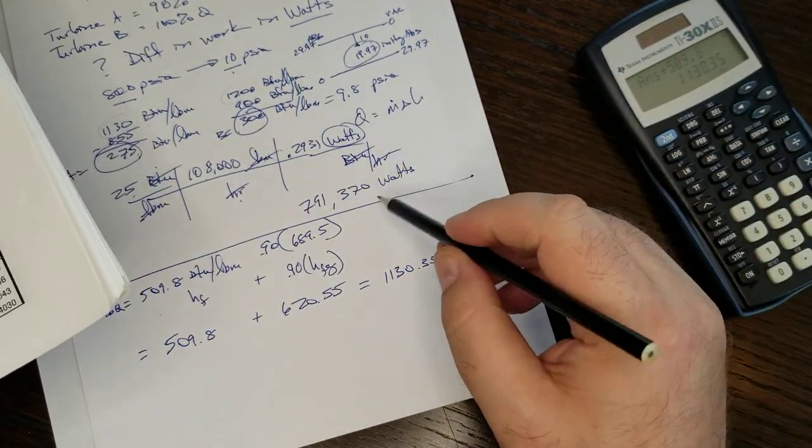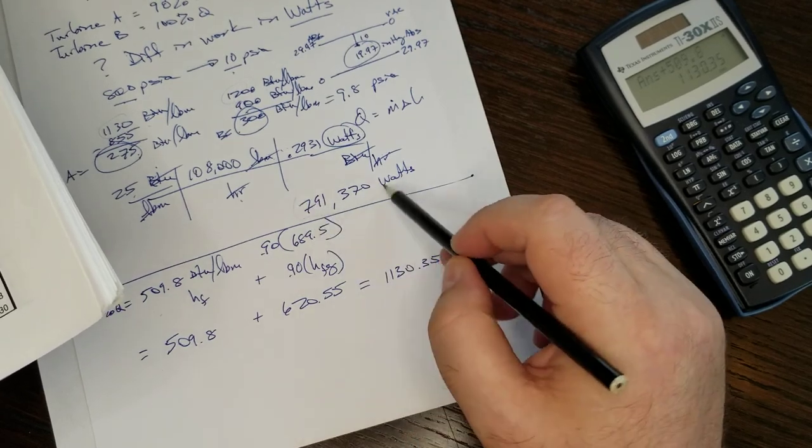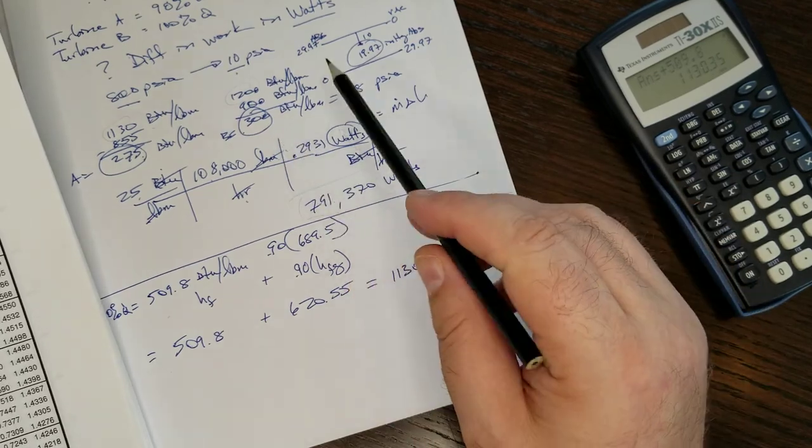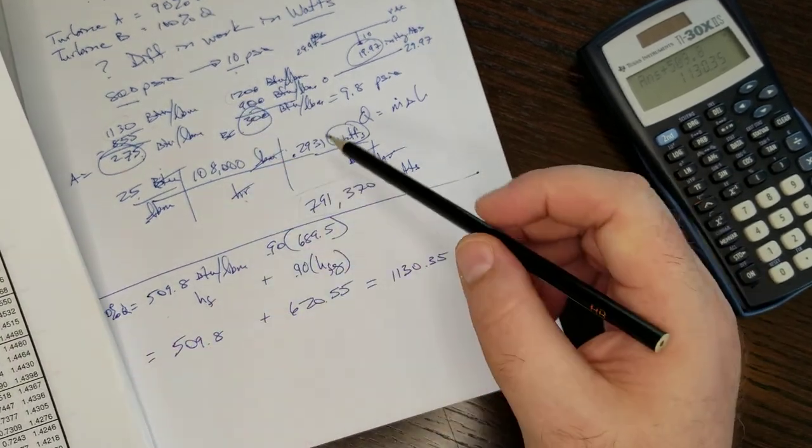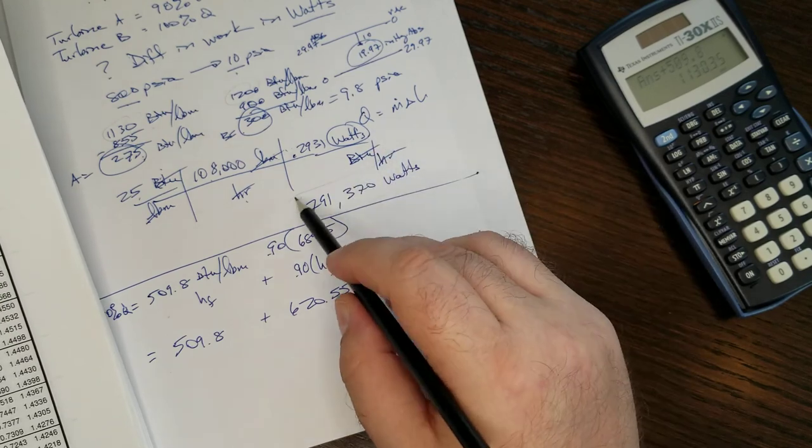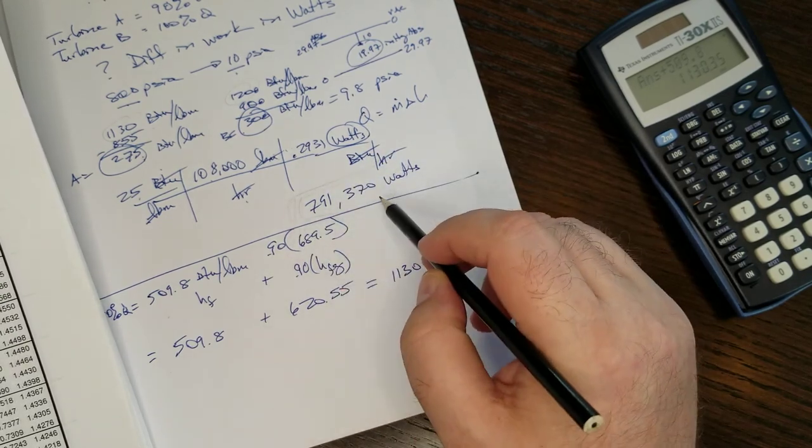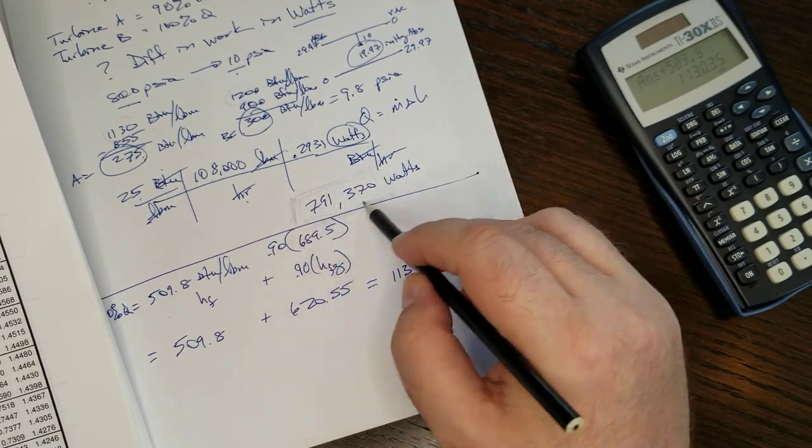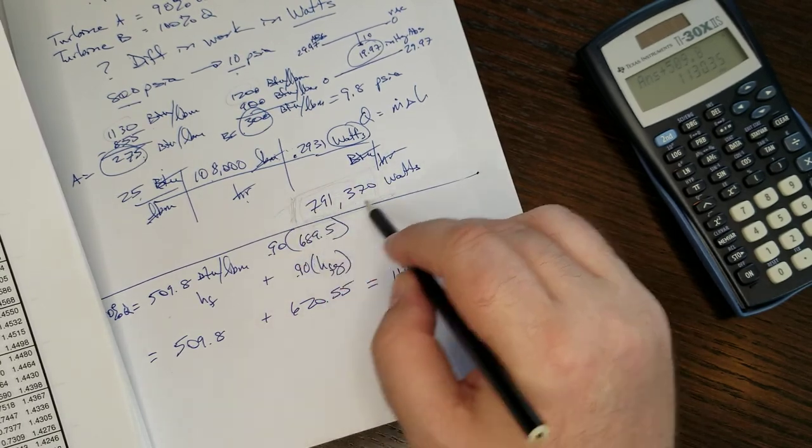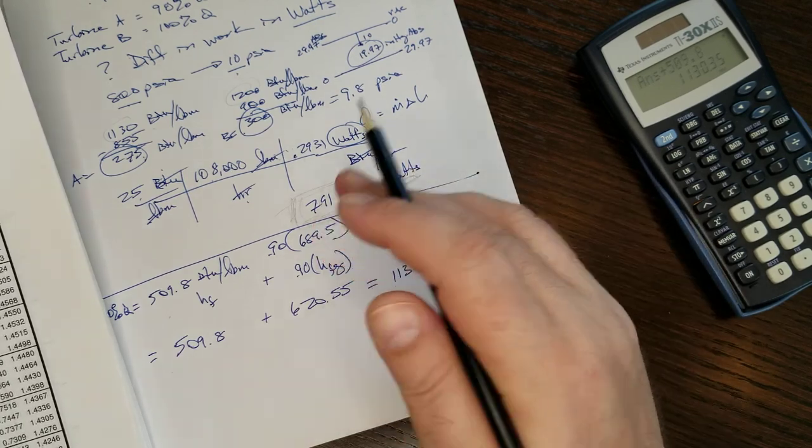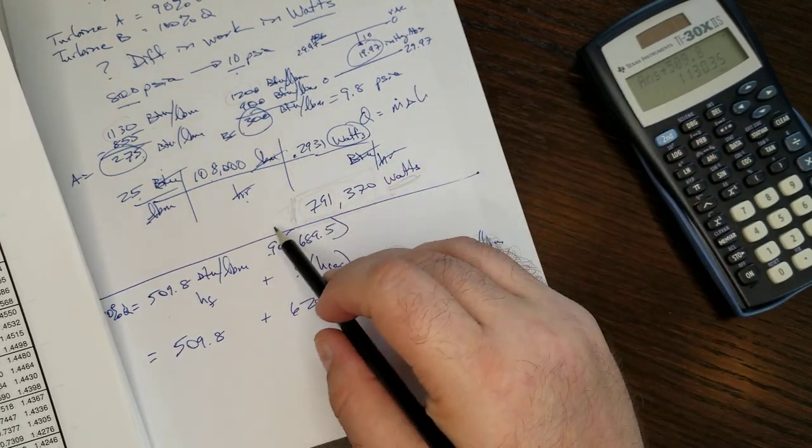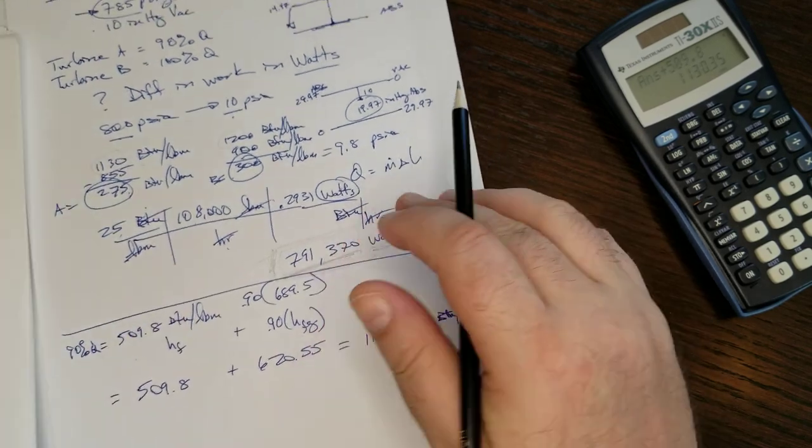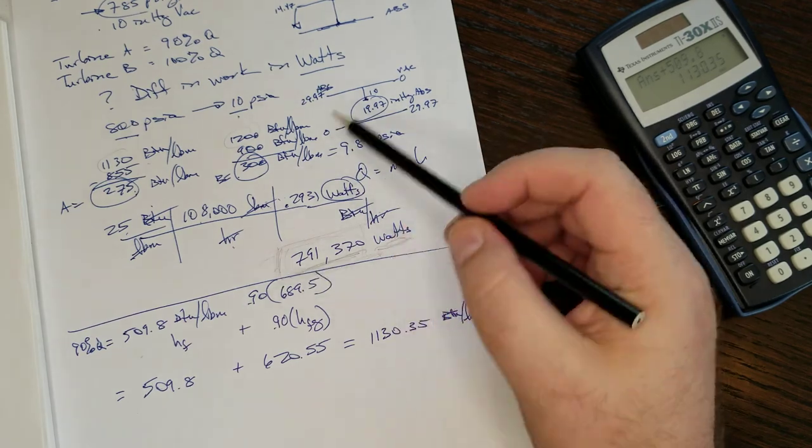And so when you're doing this on the Mollier diagram, whether you're finding the starting points in the steam tables, or you're doing the whole thing on the Mollier diagram, you should be fairly close to this. Like, you might come up with 750 to 800 and 20, 30, 40,000 watts. But you shouldn't be off by a factor of 10, right? You shouldn't come up with something that's like 1 million. So that should be pretty close. But that's solving that turbine work problem again.